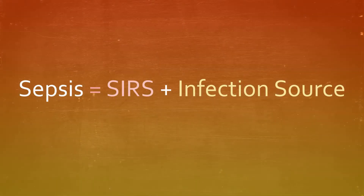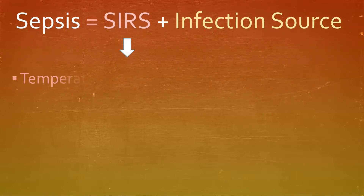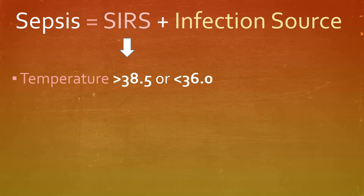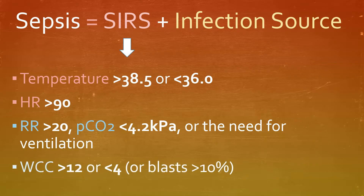Sepsis is defined as SIRS plus an infection source, where SIRS is a syndrome involving a temperature greater than 38.5 or less than 36, heart rate above 90, respiratory rate greater than 20 or CO2 less than 4.2 or the need for ventilation, and white cell count greater than 12 or less than 4.